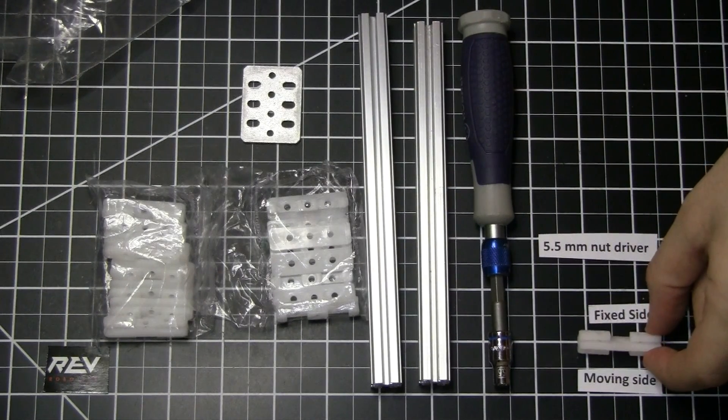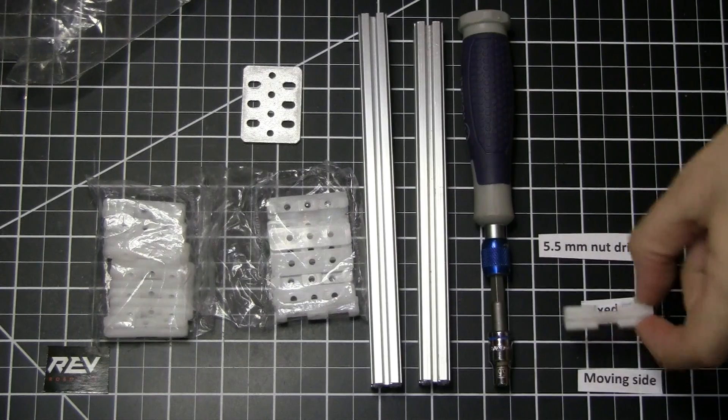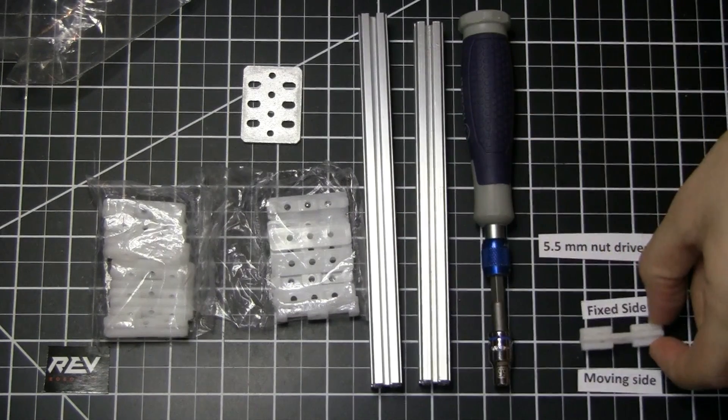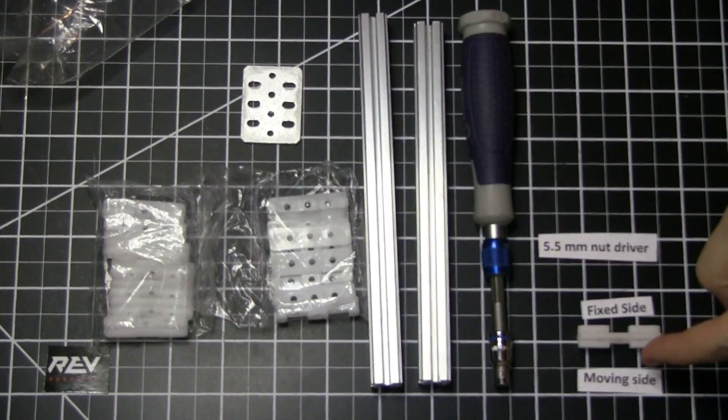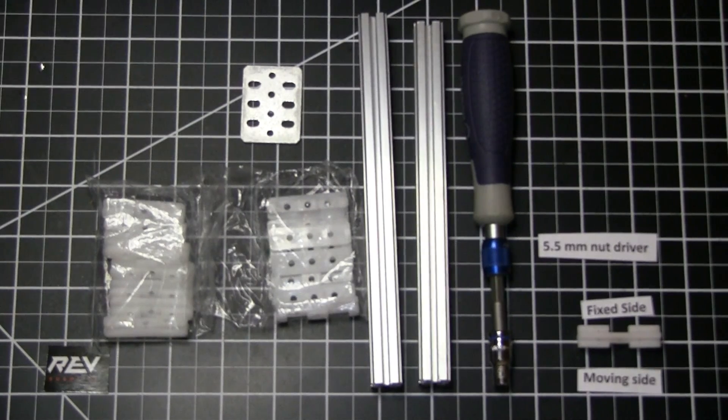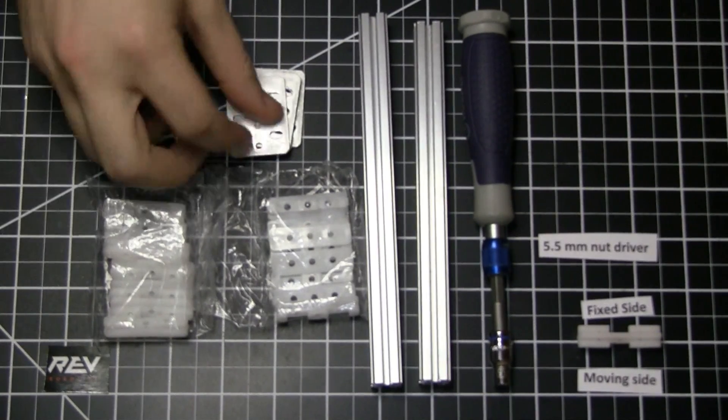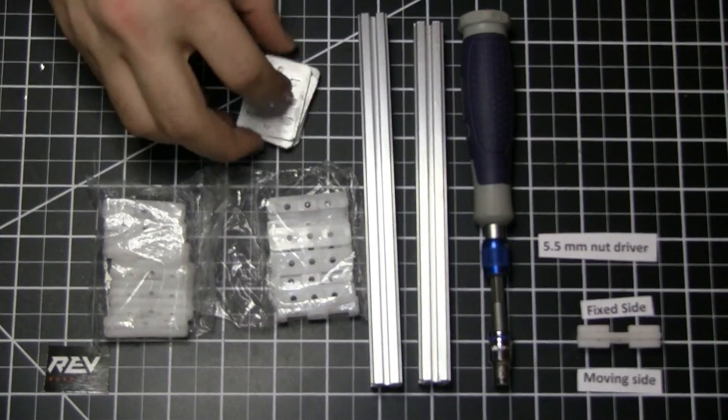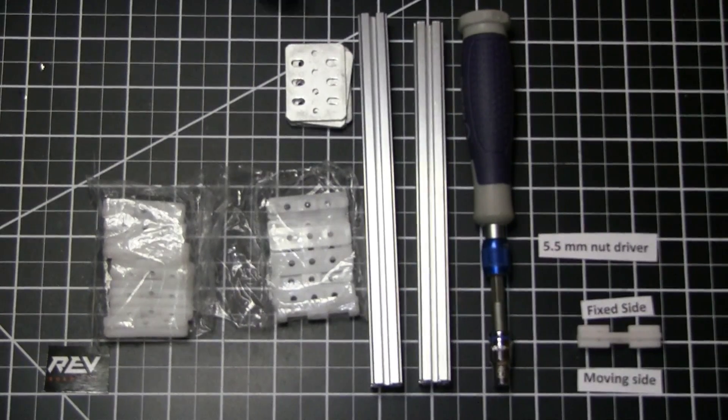It's important to note on the in-between slider that there are two very specific sides: the moving side and the fixed side. You can always tell the fixed side because it has a much deeper cut. In your kit you'll also have four of our metal joining plates and a whole bunch of hardware.